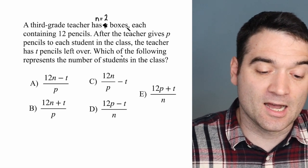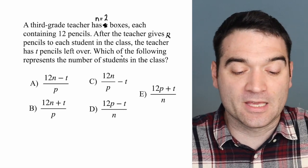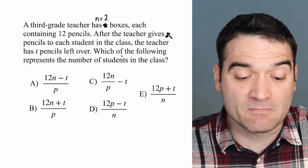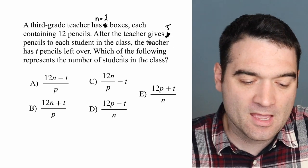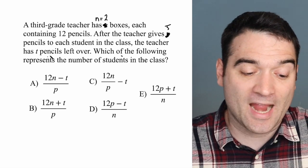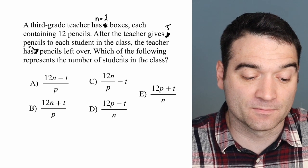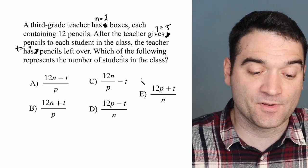Two boxes, each containing 12 pencils. So after the teacher gives, I don't know, let's say, I want to say five pencils to each student. After the teacher gives five pencils to each student in the class, the teacher has four pencils left over. So T equals 4 and P equals 5.